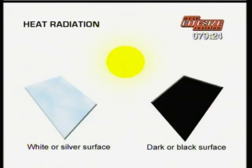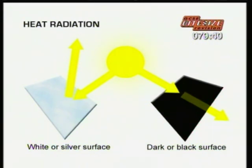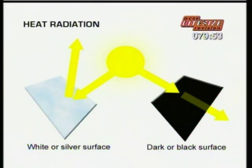The amount of radiation emitted or absorbed by an object also depends on its surface. Silvery and white surfaces are good at reflecting radiation, poor at absorbing it, and poor at giving it off. Dull, dark or black surfaces are not good at reflecting radiation, and are good at absorbing it, but they're also better at emitting radiation. Buildings in hot countries are painted white so they reflect heat radiation from the sun and keep cool. We also wear white clothes in the summer.